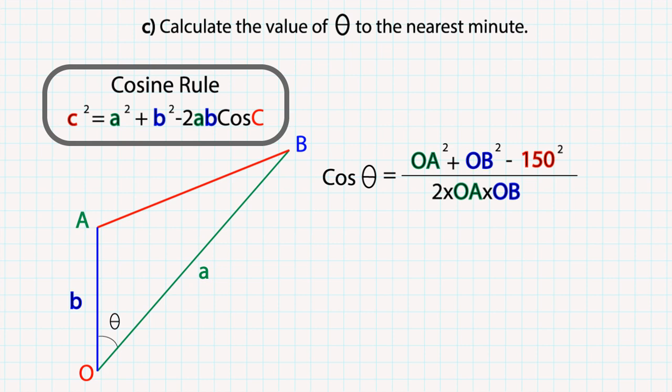If we substitute the values that we have obtained from the earlier parts, the value of cosine theta is approximately equal to 0.44, and if we take the inverse cosine of this value, theta is equal to 63 degrees and 52 minutes.